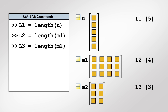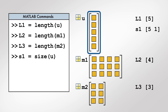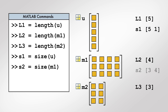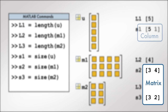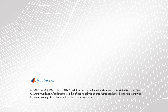We can calculate both the number of rows and the number of columns of an array with the size function. The size function accepts an array as input and returns a two-element row vector in which the first element is the number of rows and the second element is the number of columns. Therefore, we can use the output from the size function to determine if a variable represents a matrix, a row vector, or a column vector.